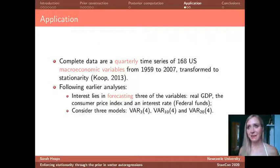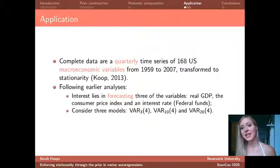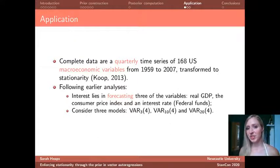So just to kind of sum up and give you a bit of a practical example of how it can be useful to adopt a prior which enforces stationarity, I'm just going to look at a quarterly time series of US macroeconomic variables. These data came from a paper by Gary Koop back in 2013, and he had also transformed these variables so that they could be approximately assumed to be stationary, for example by differencing or by taking logs and then differencing. I'm going to follow the lead in Gary Koop's work and place my interest in forecasting three of these variables: real GDP, the consumer price index, and an interest rate.